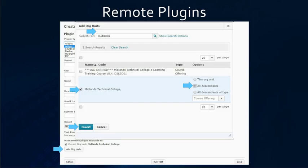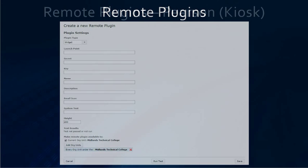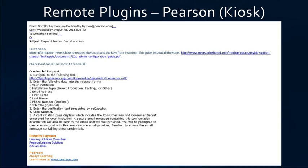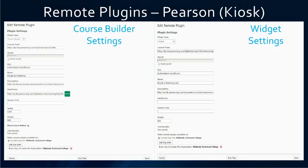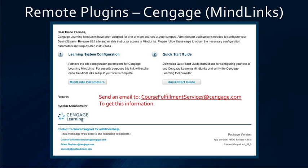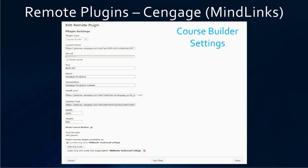Then click insert. This slide gives you the URL under credential request to get the secret and key, and the other information that you will need to fill out the remote plugin for Pearson. You should receive an email after you request your information that gives you the details to fill in to these fields. This is also the information you will need to access Cengage's secret and key website, and an example of what your Cengage settings will look like.